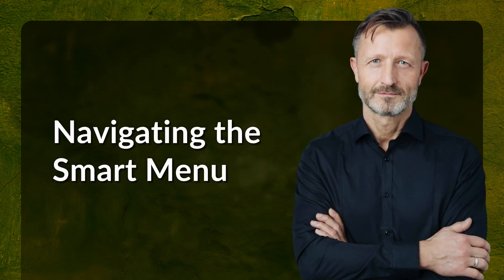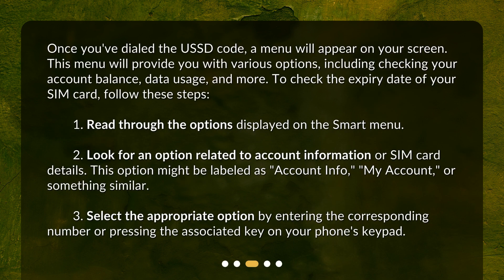Navigating the Smart Menu. Once you've dialed the USSD code, a menu will appear on your screen. This menu will provide you with various options, including checking your account balance, data usage, and more. To check the expiry date of your SIM card, follow these steps.